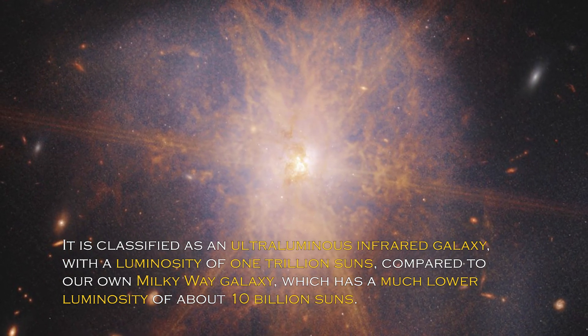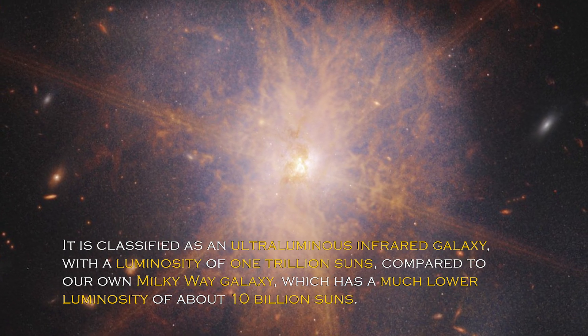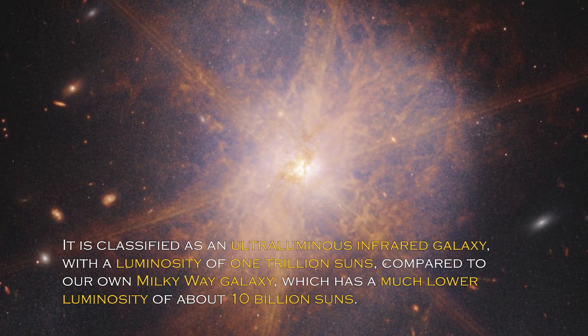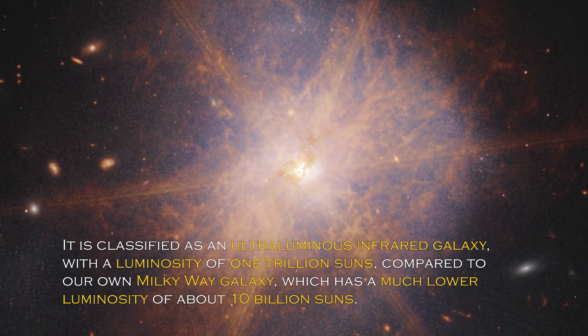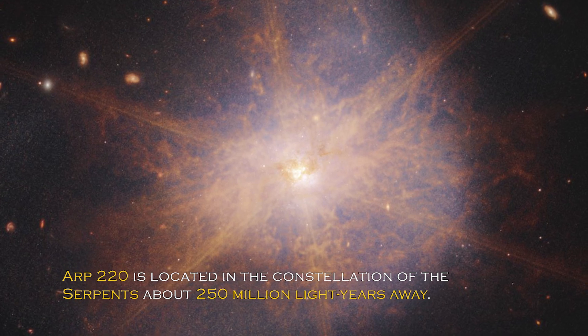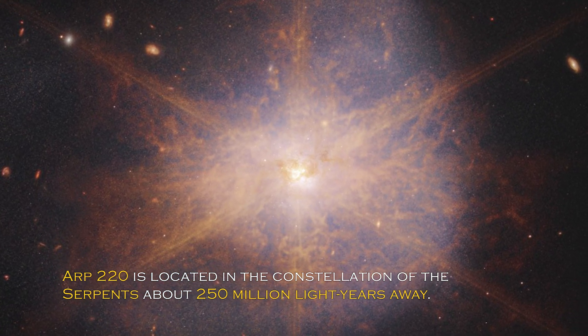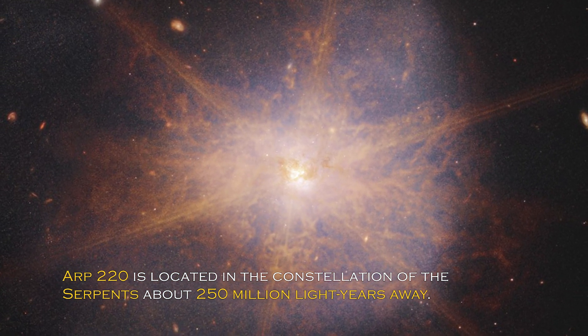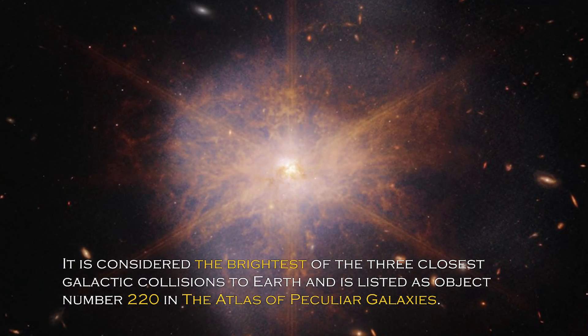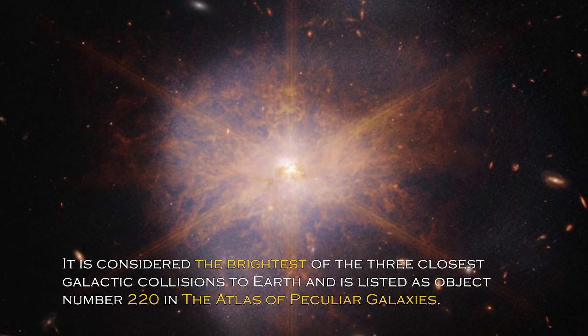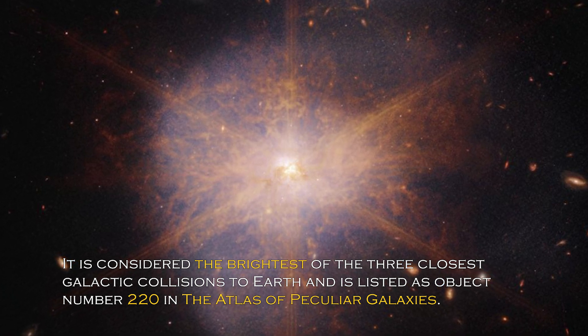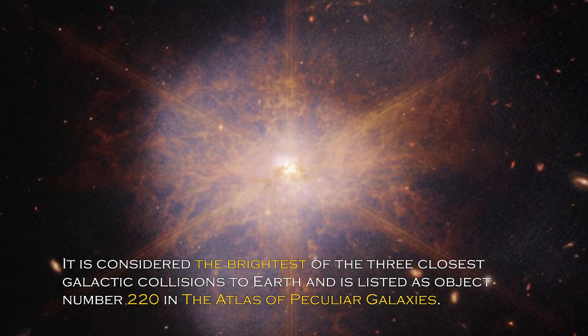It is classified as an ultra-luminous infrared galaxy, with a luminosity of trillion suns compared to our own galaxy, the Milky Way, which has much lower luminosity of about 10 billion suns. ARP 220 is located in the constellation of the Serpents, about 250 million light-years away. It is considered the brightest of the three closest galactic collisions to Earth, and it is listed as object number 220 in the Atlas of Peculiar Galaxies.